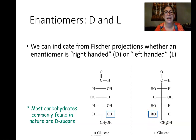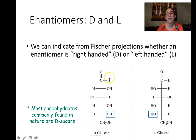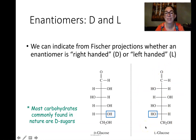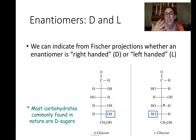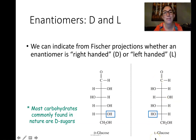Most sugars in our diet are the D variety. Plants make specifically D-glucose, and we have enzymes that match specifically D-glucose — we cannot digest or get energy from L-glucose. There was actually a period when researchers looked at producing L-glucose as a calorie-free alternative sweetener, because it still tasted sweet but we couldn't metabolize it. However, it turned out to be more expensive to make than other artificial sweeteners, so it never took off.